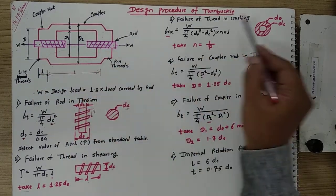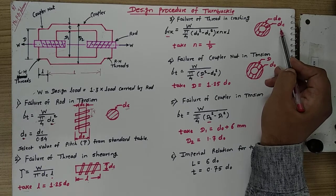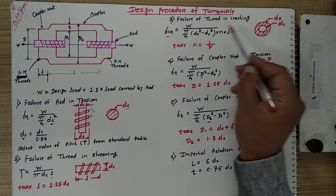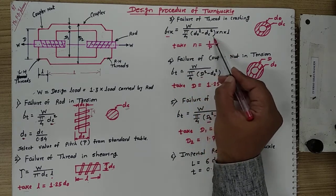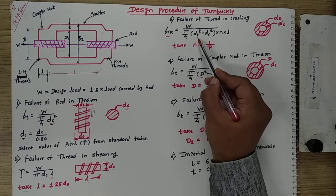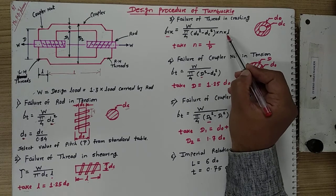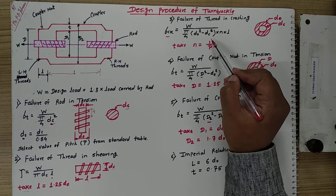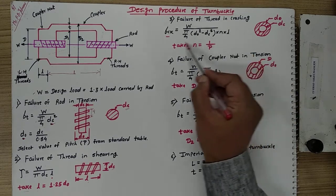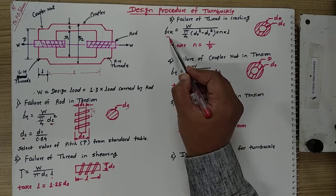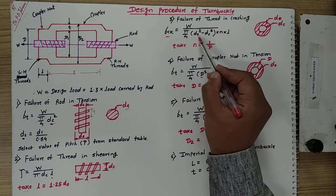The threaded portion also fails in crushing, having dimensions DO (nominal diameter) and DC (core diameter). The crushing stress sigma_ck equals load upon area, where the area is the hollow circular section: pi by 4 times (DO squared minus DC squared), multiplied by n times l — where n is the number of threads, calculated using the empirical relation 1 divided by pitch. We check whether sigma_ck is within the allowable limit; if not, we modify the dimensions.